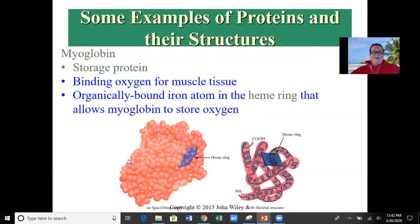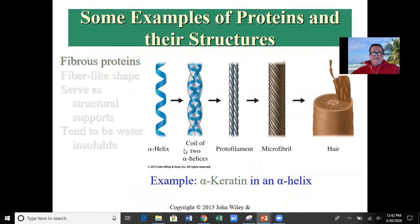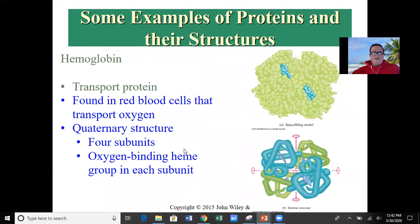So this is a globular protein. It has a much different shape than these fibrous ones. Hemoglobin is used to transport red blood cells. Again, if you look at this, it just looks kind of like a blob. This is a more simplistic version of it. And I'll share some more representations of the hemoglobin molecule in a little bit.